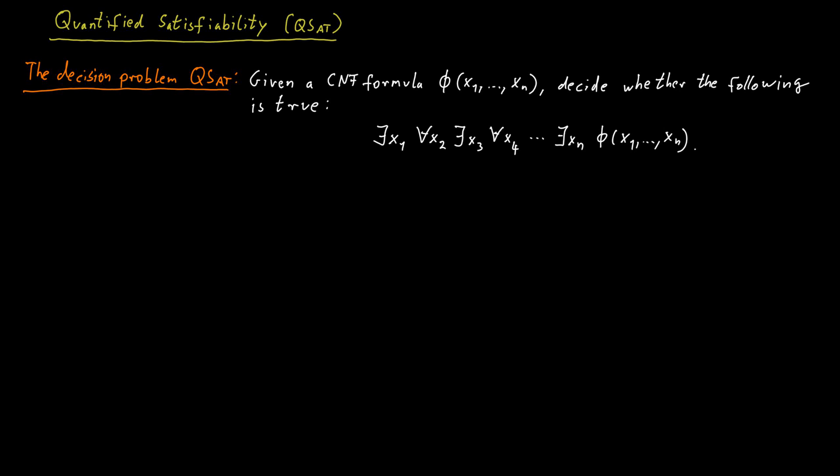Here I assume that n is odd. If n is even, then the quantifier in front of xn needs to be a universal quantifier. So we would have for all xn. But really, without loss of generality, we can just assume that n is odd.